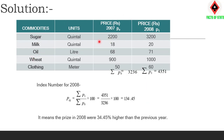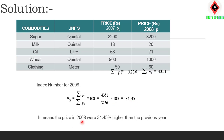Formula: (Sigma P1 / Sigma P0) × 100. Sigma P0 sum is 3,236 and Sigma P1 is 4,351. By putting the values in the formula, the answer is 134.45. This means prices in 2008 were 34.45 percent higher than the previous year — subtract 100 from the index to get the exact percentage increase, which is 34.45.